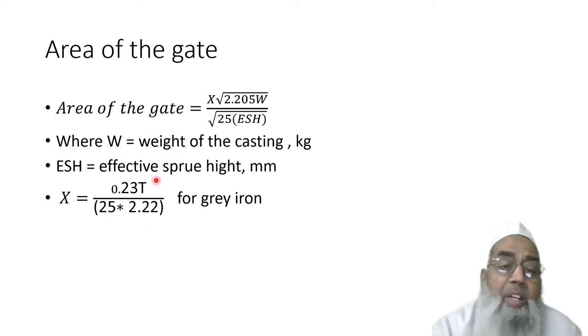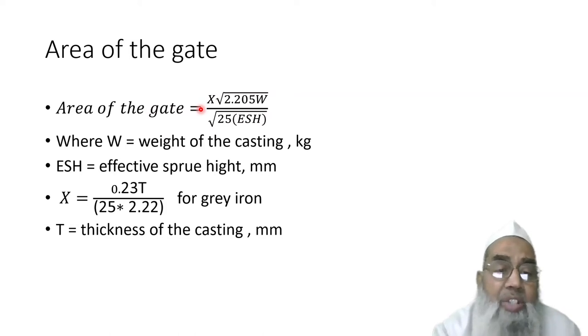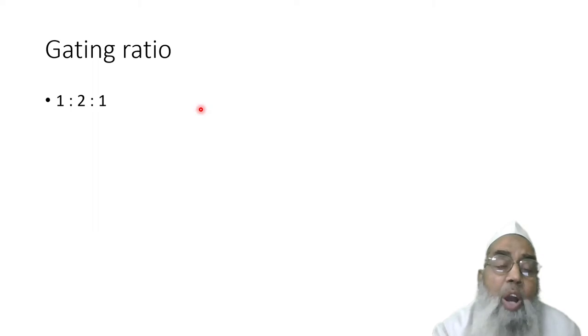We know the height and weight. The value of x for grey cast iron can be given from a particular equation. This x value can be put into the equation to find out the area of the gate. The general gating ratio is given by values like 1:2:1, 1:2:0.6, 1:4:1, or 2:7:1 as pressurized gating ratios.